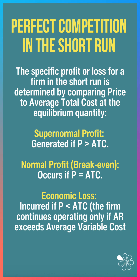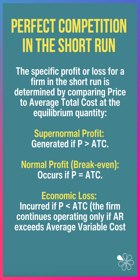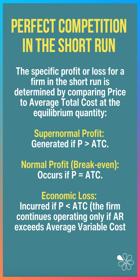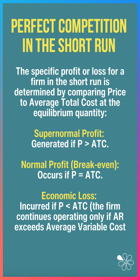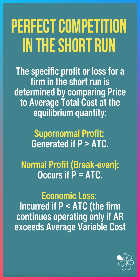The specific profit or loss for a firm in the short run is determined by comparing the market price to the average cost of each firm — not all firms have the same costs. You make a supernormal profit if price is above average cost; you break even or make normal profit if price equals average cost; but you can also incur an economic loss if price is below ATC. Indeed, the shutdown point is that the price needs to be bigger than the minimum average variable cost.